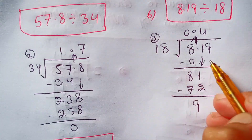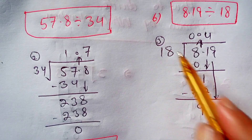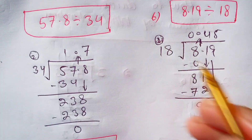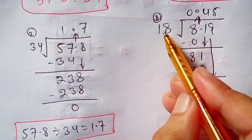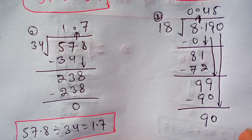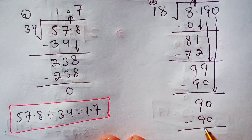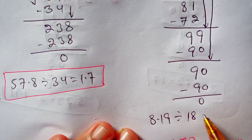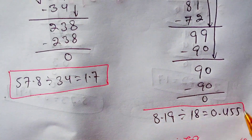9 is less than 18, so we put 0 and bring down to make 99. 5 times 1 is 5 plus 4 is 9. Subtract 90 from 99, the remainder is 9. 9 is less than 18, so we put 0 in the dividend and bring it down near 9 to make it 90. So we can say that 8.19 divided by 18 is equal to 0.455. This is our final answer.